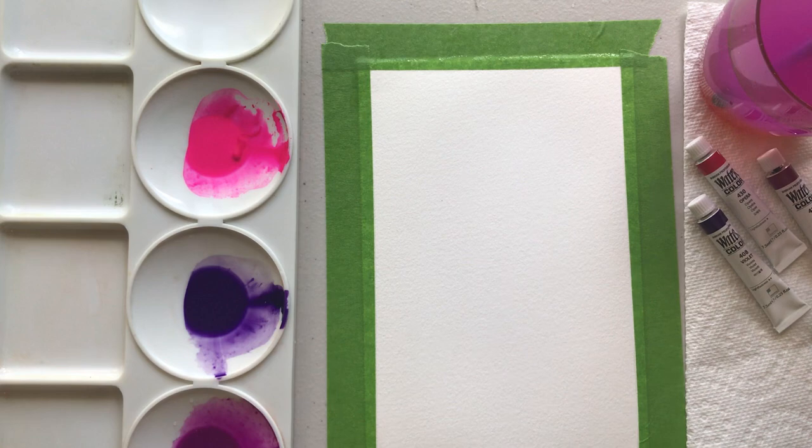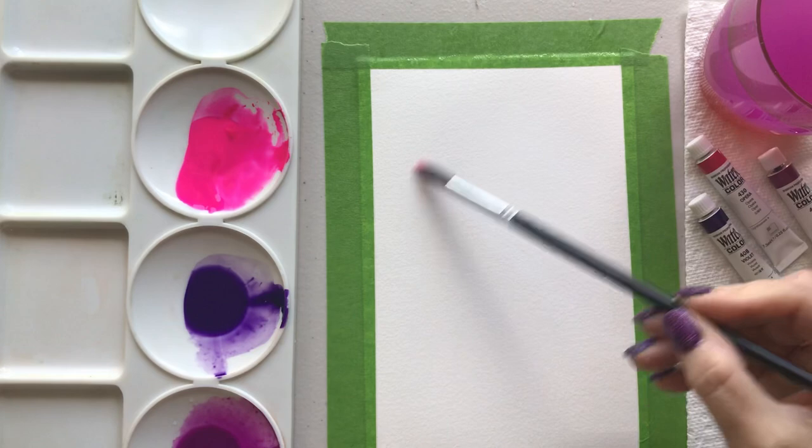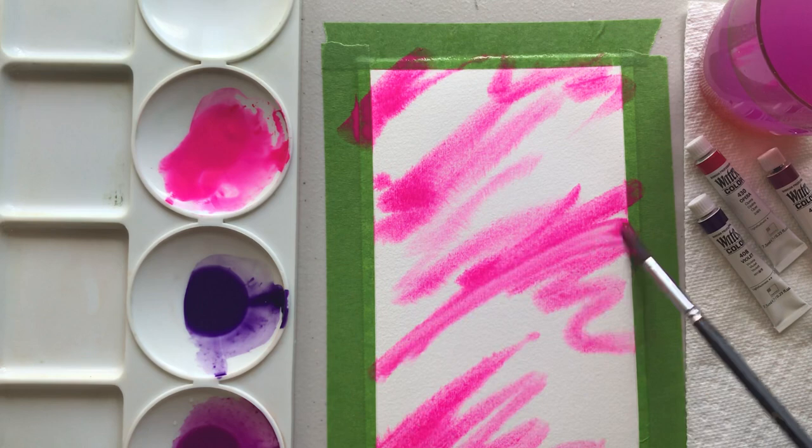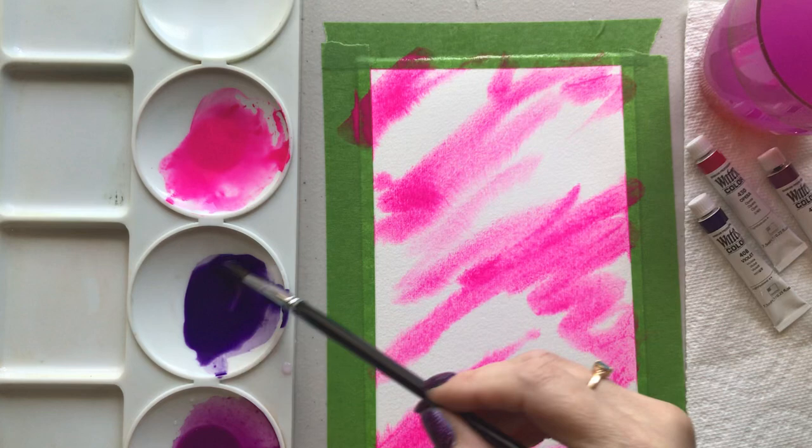All right so then I'm going to switch to a round brush and I'm just going to start with one of my colors. Let's go ahead and use this crazy pink one and I'm just going to streak it in and if you've done some of my other tutorials it's very much like how we start a lot of our backgrounds streaking in color on wet paper.